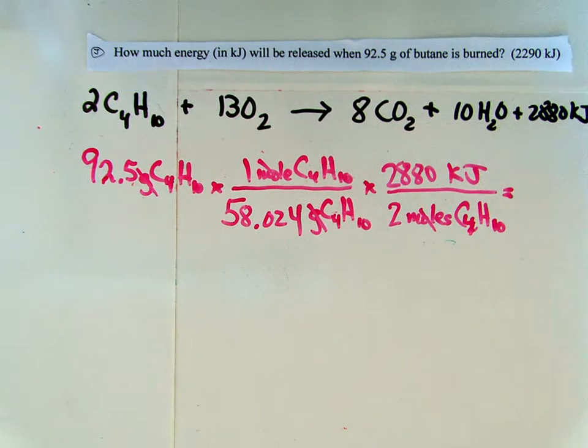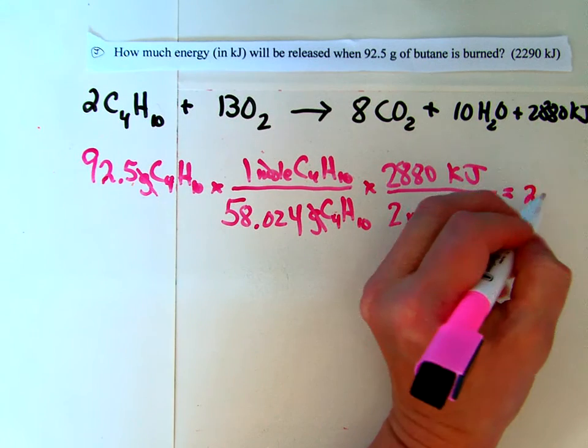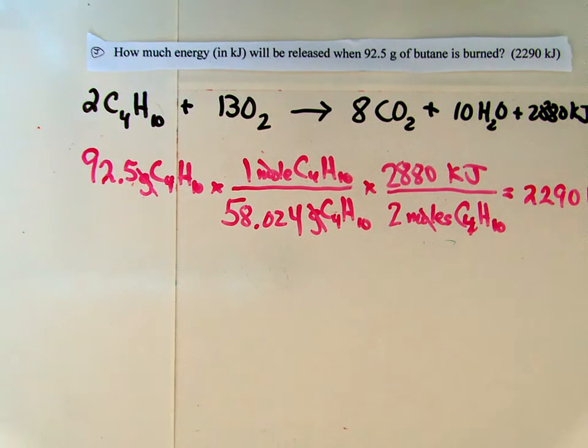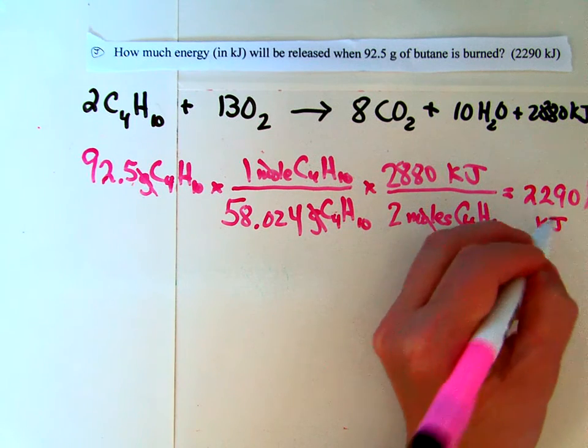then divide it again by 2, and I get 2,290 kilojoules. I guess the kilojoules got cut off on the screen here. I went a little over 2,290 kilojoules.